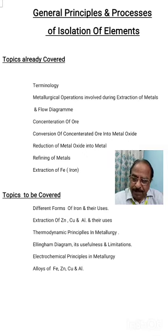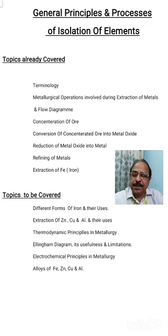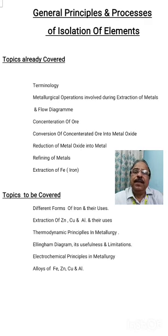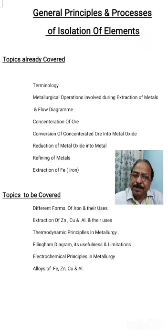After that, I took up extraction of iron — the extraction of iron from hematite by blast furnace. Then I was to take the various forms in which iron is available in the market. Today we start this topic. The topics to be covered now are: different forms of iron, and then extraction of zinc metal, copper metal, and aluminium metal from their respective ores.